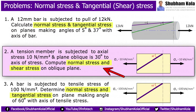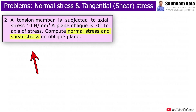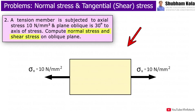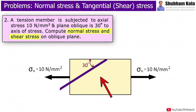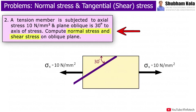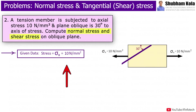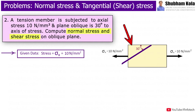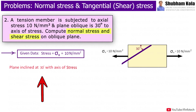For the next problem, the statement is: a tension member is subjected to axial stress of 10 N/mm², and the oblique plane makes an angle of 30° with the axis of stress. Compute the normal stress and shear stress on the oblique plane. The given data is: tensile stress σx = 10 N/mm², and we need to find normal stress and shear stress on the inclined plane at 30° with the horizontal axis.